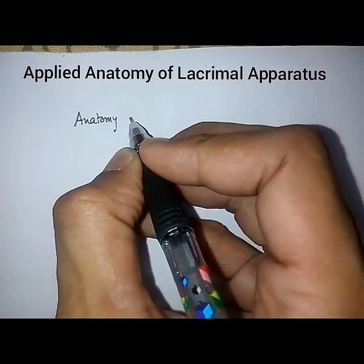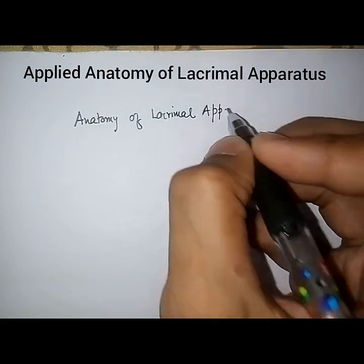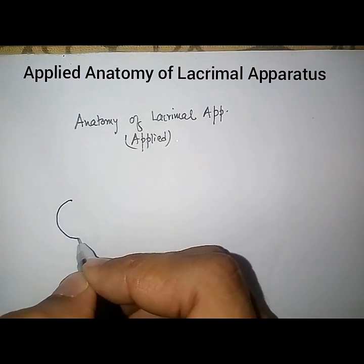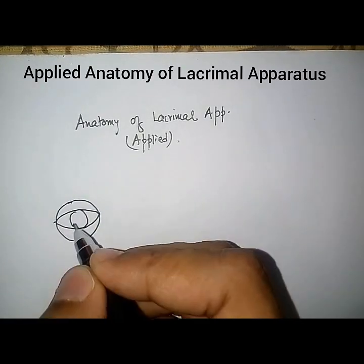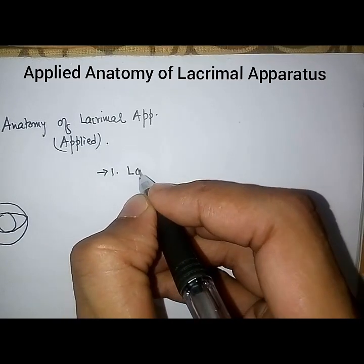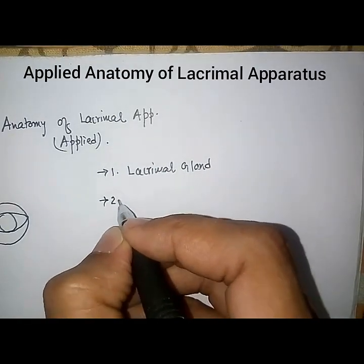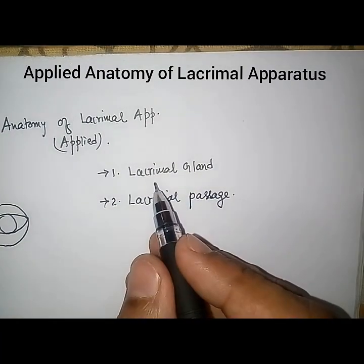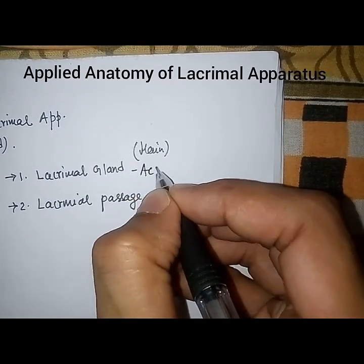Anatomy of the lacrimal apparatus, mainly the applied portion. The lacrimal apparatus consists of two things: first, the lacrimal gland, and second, the lacrimal passage. The main lacrimal gland and some accessory lacrimal glands make up the glandular component.